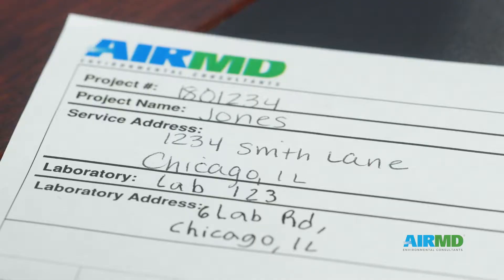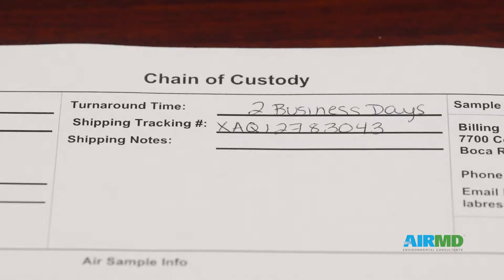To complete a chain of custody, the following must be completed: the project number, project name, and the physical address where the assessment was completed, the name of the laboratory the samples are being sent to, and the laboratory address. The laboratory turnaround time for analysis must be indicated so the laboratory knows when the sample results must be issued.